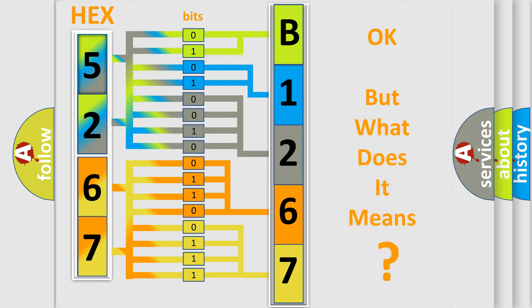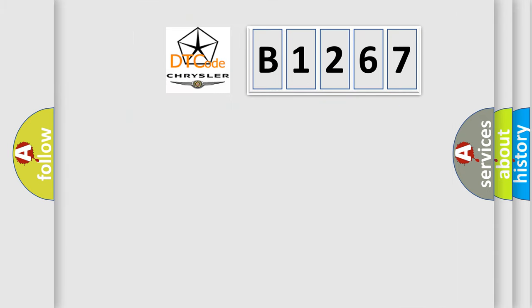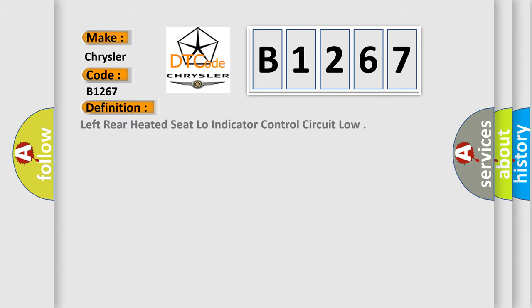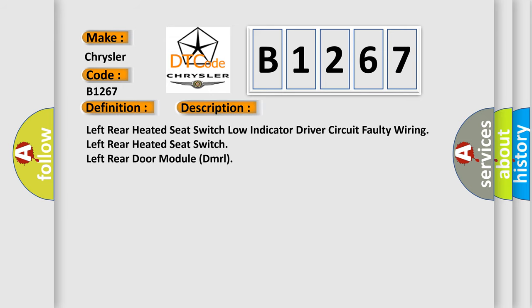The number itself does not make sense if we cannot assign information about what it actually expresses. So, what does the diagnostic trouble code B1267 interpret specifically for Chrysler car manufacturers? The basic definition is: Left rear heated seat low indicator control circuit low. The short description of this DTC code is: Left rear heated seat switch low indicator driver circuit — faulty wiring, left rear heated seat switch, or left rear door module (DMRL).